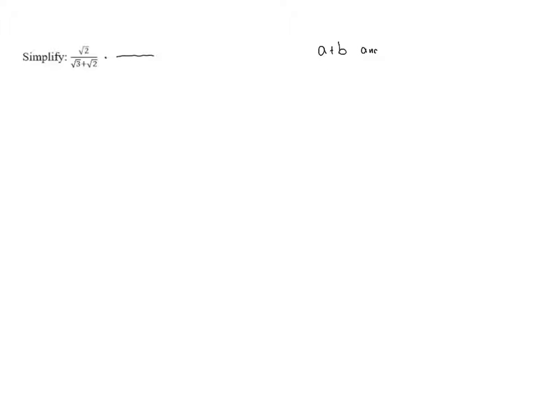We're going to have to talk about a new concept called conjugates. If we have a sum, a plus b, and a difference, a minus b, these are called conjugates. If we have a sum of two numbers and a difference of those same two numbers, we call those quantities conjugates.